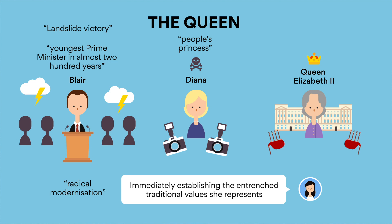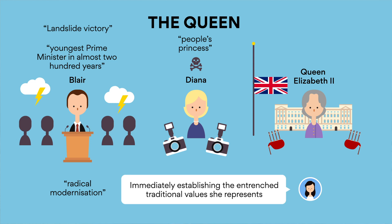Despite heavy resistance from the Queen, Blair eventually encourages her to surrender old royal protocols and adopt a more modern approach to meet public expectation — to fly the flag at half-mast, hold a public funeral, and publicly grieve for the loss of Princess Diana. All in all, to show the people that the monarchy actually cares. The Queen's decision to accept Blair's advice ultimately reconnects her with the British people and restores the royal family's reputation amongst the public.